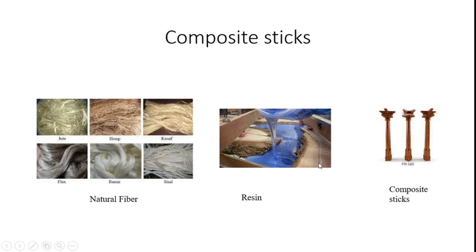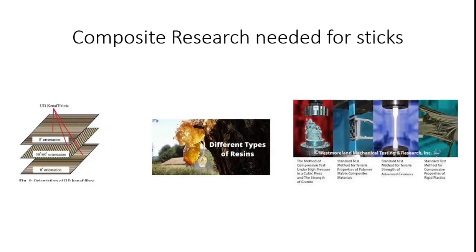This is an important research area in our mechanical engineering department. Composite research is needed for sticks — we can differentiate the orientation of fibers, such as 0 degrees, 30 degrees, and 60 degrees. We can also apply different kinds of resins on the fiber materials to make different composite materials for different applications, improving tensile strength, impact strength, and fatigue strength.